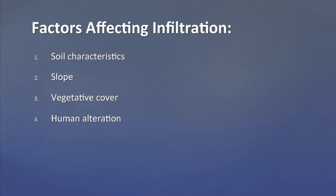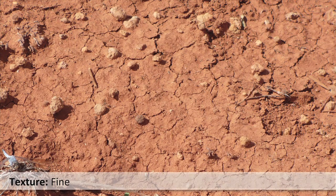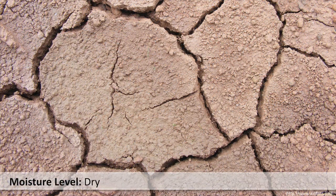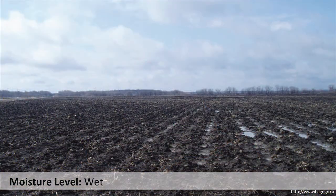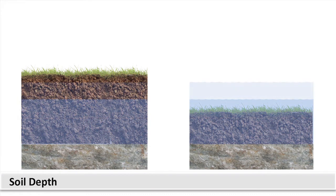Soil characteristics, slope, and vegetative cover are among the most important natural factors, along with others resulting from human alteration of the landscape. The infiltration rate is heavily dependent on the soil's characteristics. Three main factors affect infiltration rates of soils — texture, moisture level, and depth. A soil with a coarse texture, such as a sandy soil, will absorb water more rapidly than one with finer particles such as clay. Drier soils will initially absorb water more rapidly than those that are wet, but as the air pockets between the particles are replaced with water, the infiltration rate decreases. Soils with greater depth to bedrock are able to contain more water than those with shallow depths.